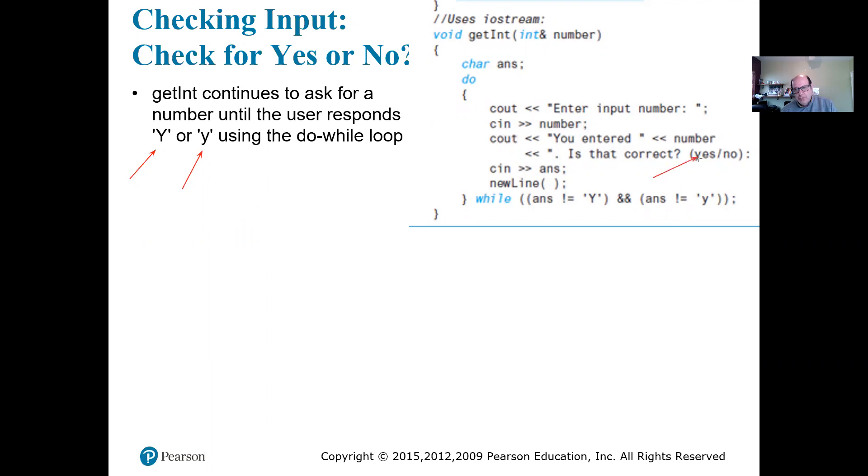So we are asking the user for a yes and no answer but we are going to be reading only the first character of it and then we're going to use the newline to get rid of the rest of the characters and then we're going to check to see if it's y, if it's not y and it's not lowercase y.